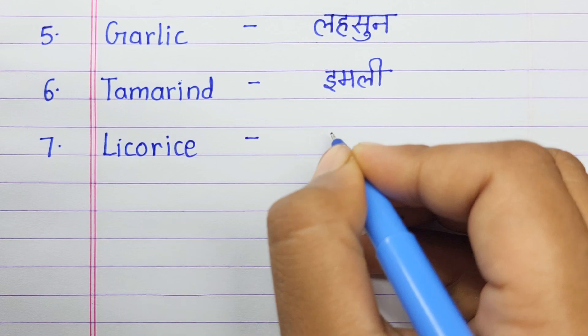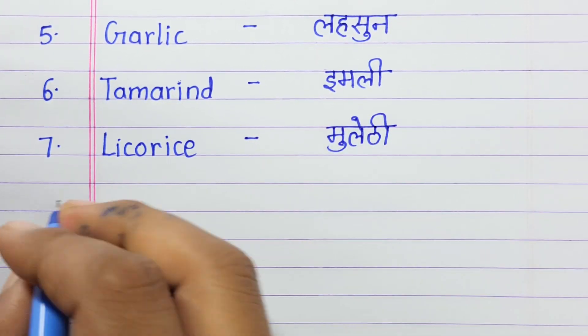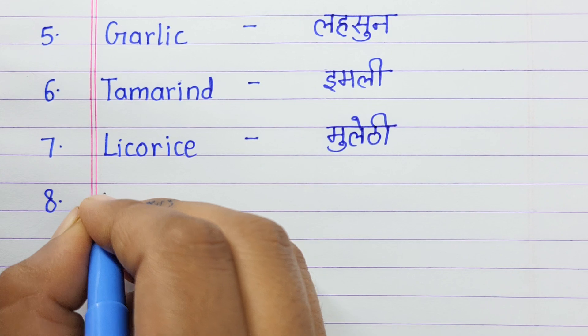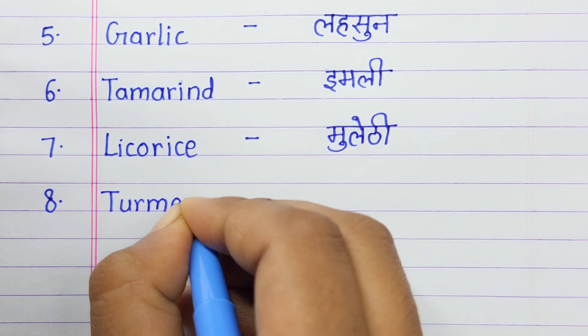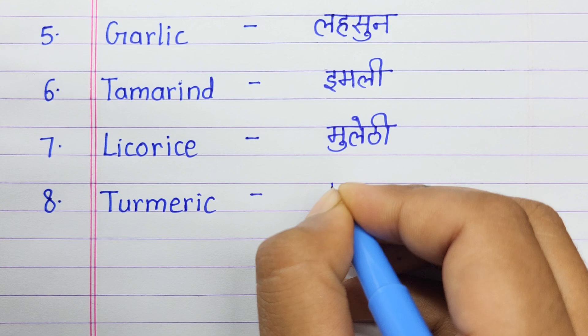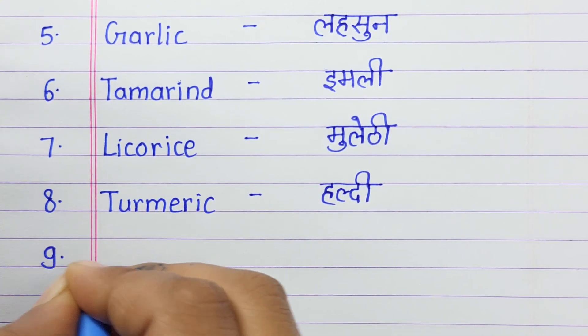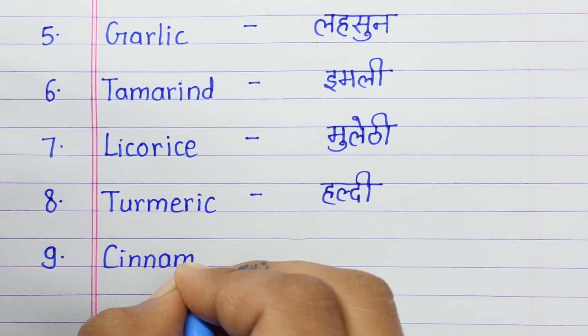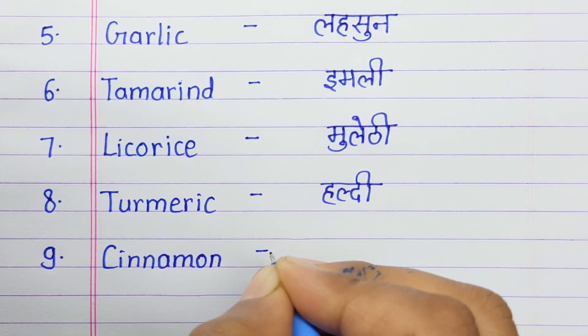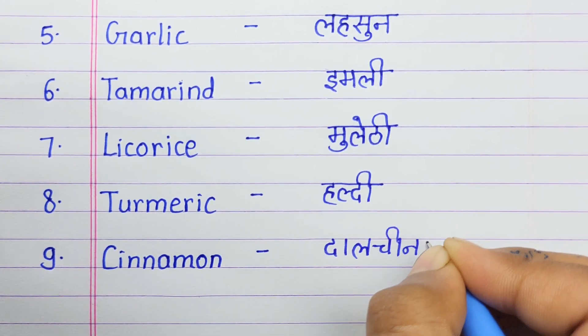Number seven: Licorice means muleti. Number eight: Turmeric means haldi. Number nine: Cinnamon means dalcini.